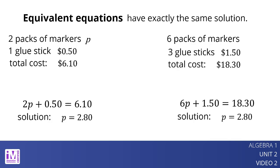The solution to this equation is also 2.80. 2p plus 0.5 equals 6.10 and 6p plus 1.50 equals 18.30 are equivalent equations, because p equals 2.80 is the only value that makes each equation true, so they have exactly the same solution.